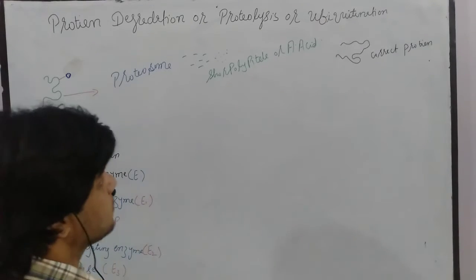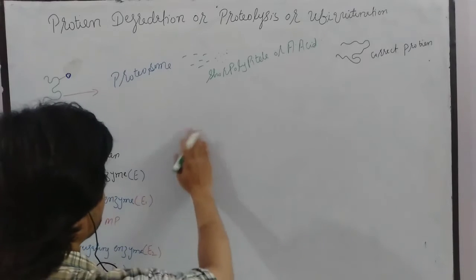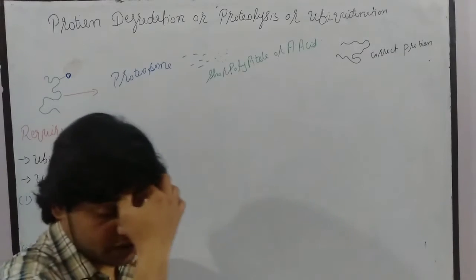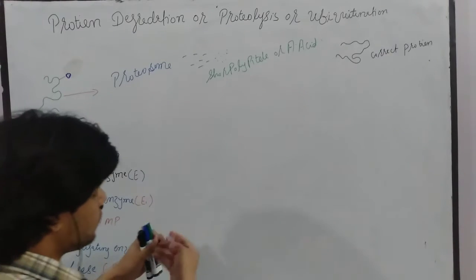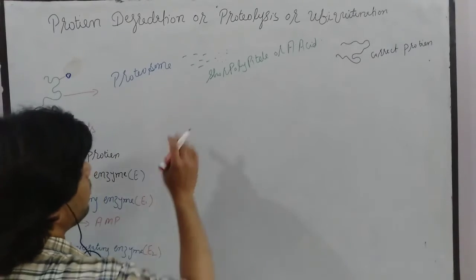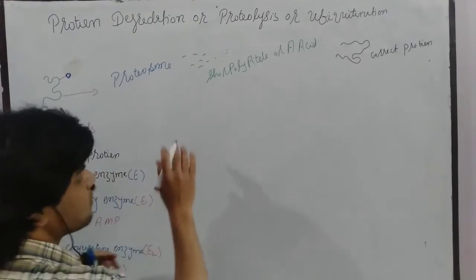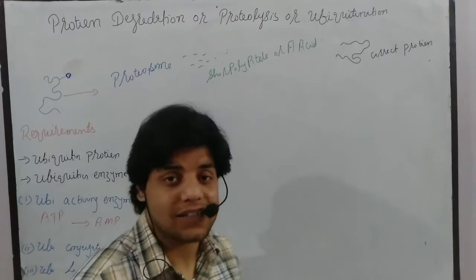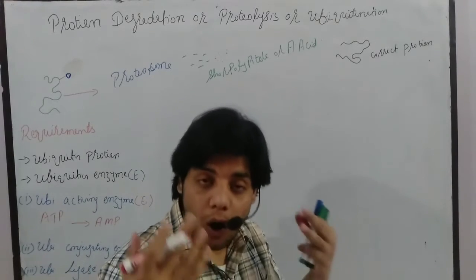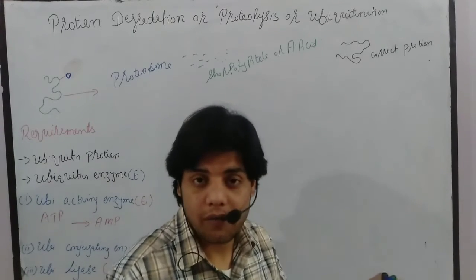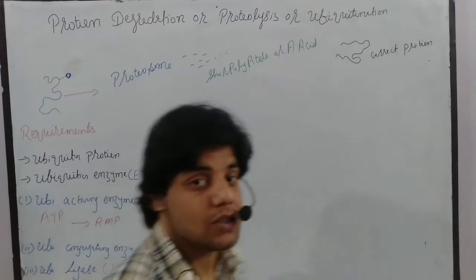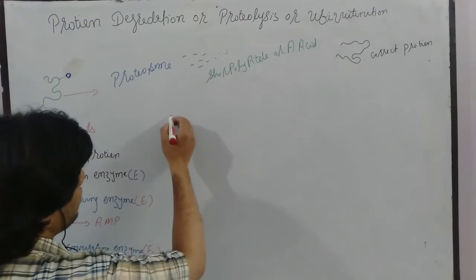Now let's discuss the mechanism of protein degradation. We have a target protein and ubiquitin — which is itself a protein — present inside the cell in an inactivated form. Once misfolded proteins are formed, or proteins that have no function, the ubiquitin enzymes become activated. First, we start with the ubiquitin protein.